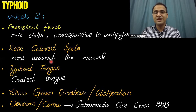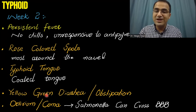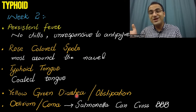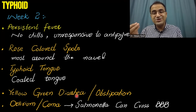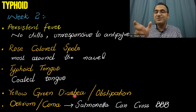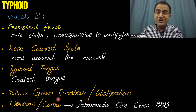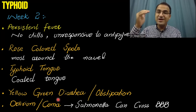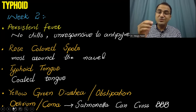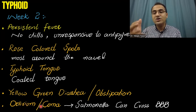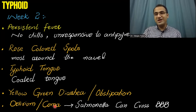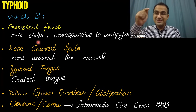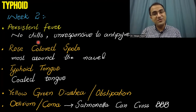The patient will be complaining of yellow-green, foul-smelling diarrhea, and sometimes constipation — there will be alternation between obstipation and diarrhea. Remember, Salmonella can penetrate the blood-brain barrier and enter the brain, so in severe cases the patient can present with delirium and coma. This is the presentation of a patient in the second phase of typhoid infection.